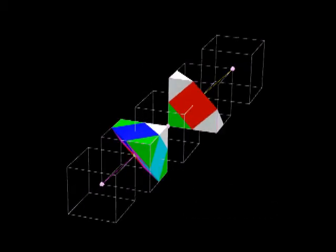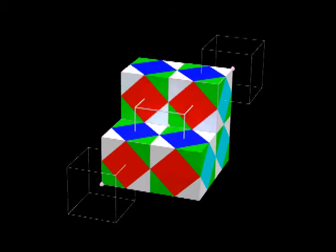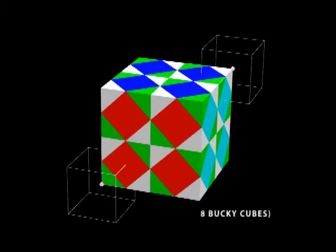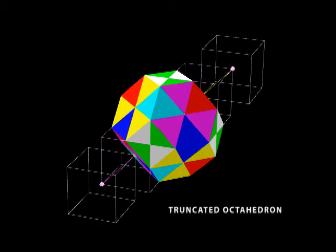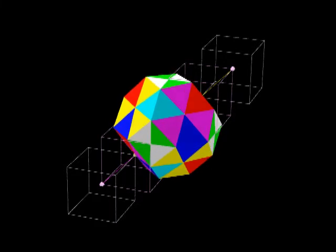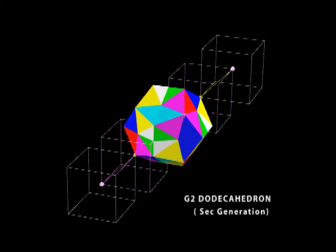Now let's form a cube of eight Bucky cubes. Now we will slice these cubes down the same as those other two. And we come up with a perfectly symmetrical truncated octahedron. And as you see, this truncated octahedron will change perfectly into a second generation of dodecahedron.